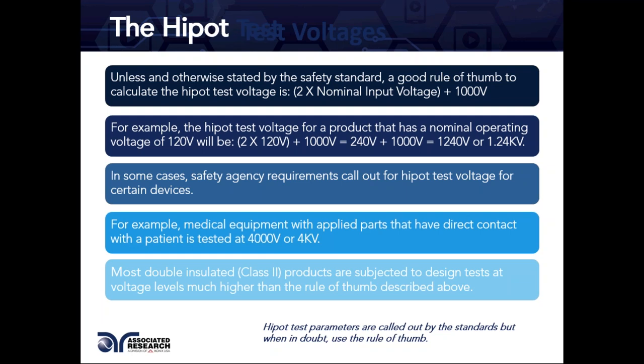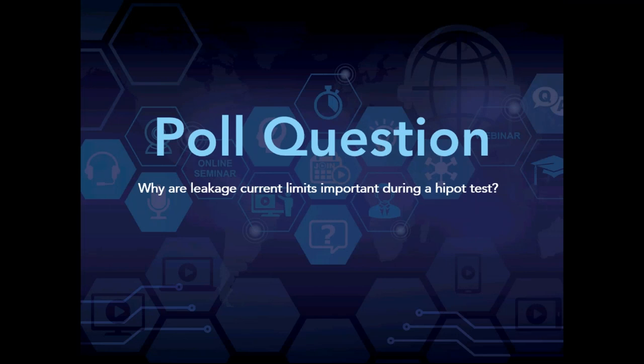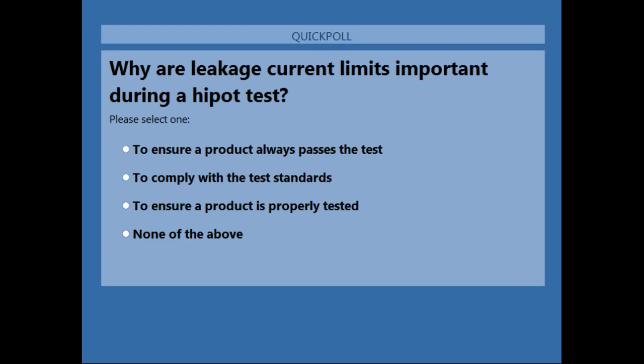The important takeaway is that Hypot test parameters are called out by test standards. When in doubt, use the rule of thumb: twice the voltage rating plus 1,000 volts. That leads us to our first poll question: why are leakage current limits important during the Hypot test? Please take a moment to participate.